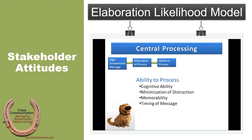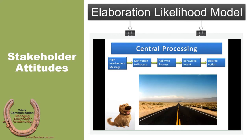So, we're motivated to process and able to process. If both of those preconditions exist, we're likely to head down the road toward behavioral intent. As we discussed with the theory of reasoned action and the theory of planned behavior, there is a strong relationship between behavioral intent and desired action. So, if we have the right steps in place — the motivation to process a message and the ability to process a message — then our high involvement messages are much more likely to lead to the behavioral intent and desired action we want.